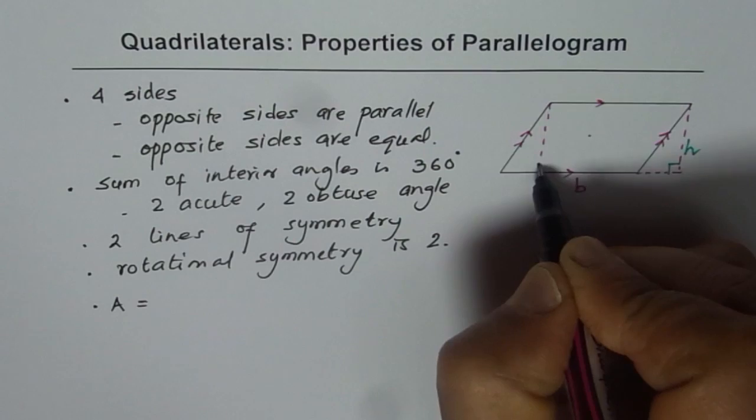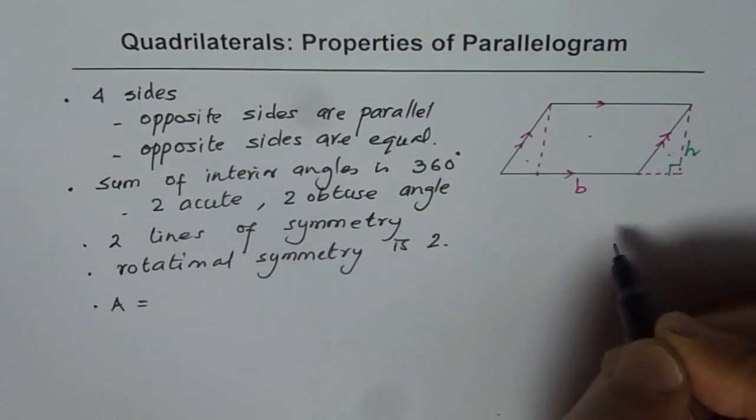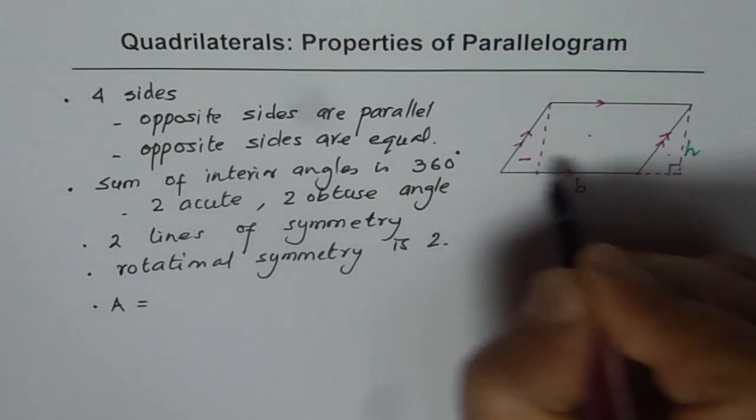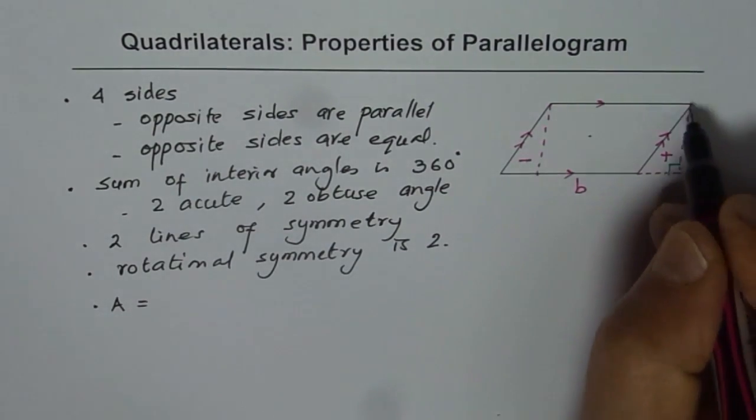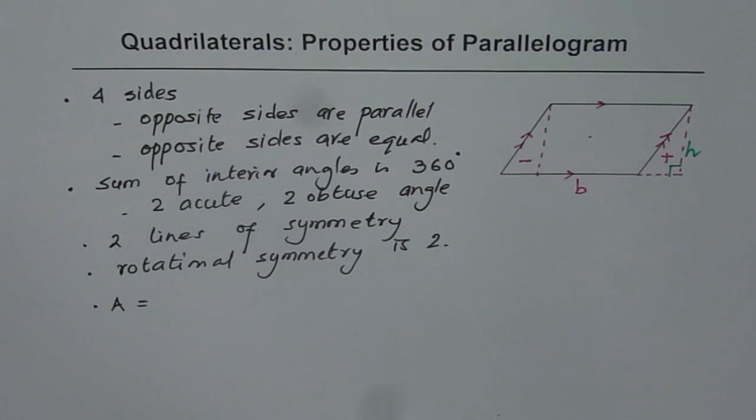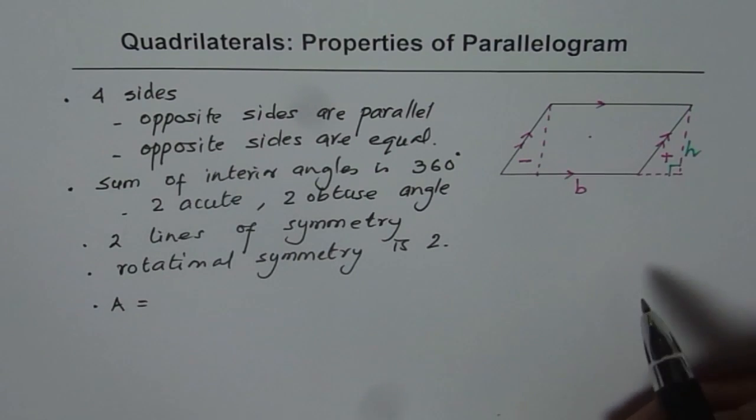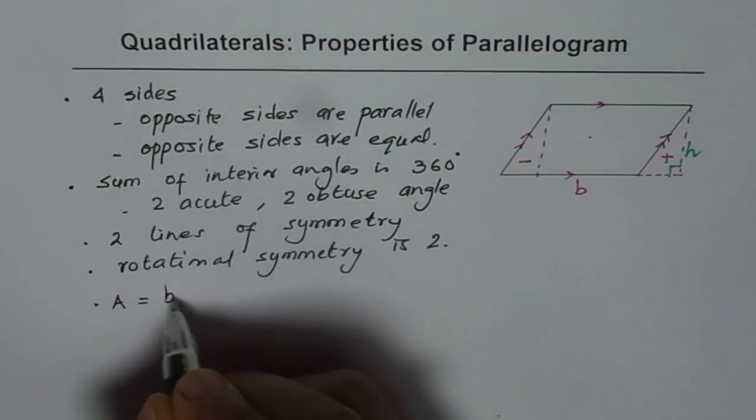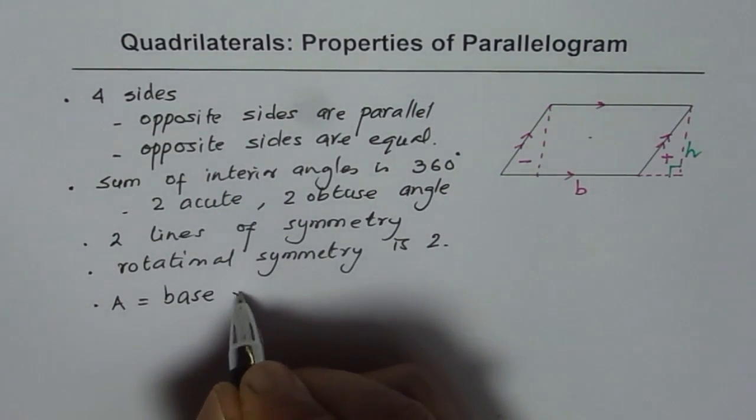Cut this triangle and place it here. So when you take it away and add it on this side, what do you get? You get a rectangle. And you know, area of a rectangle is length times width, or in this case base times height. So it is base times height.